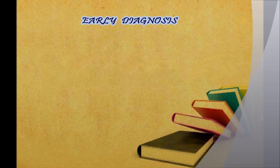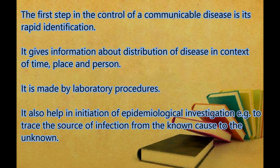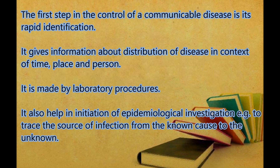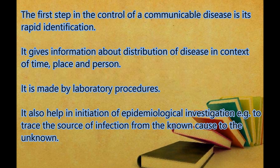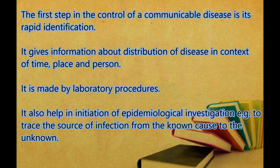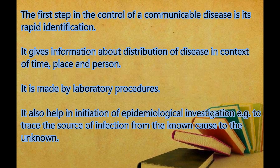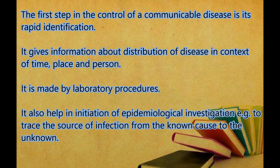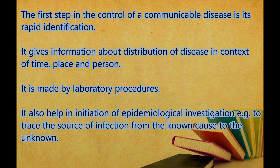Early Diagnosis: The first step in the control of a communicable disease is its rapid identification. It gives information about the distribution of disease in context of time, place, and person. It is met by laboratory procedures and helps in initiation of epidemiological investigation — for example, to trace the source of infection from the known cause to the unknown.